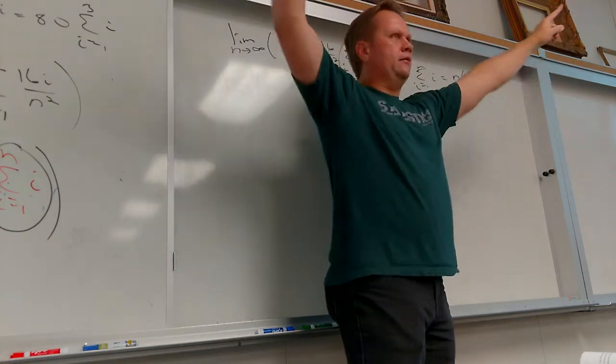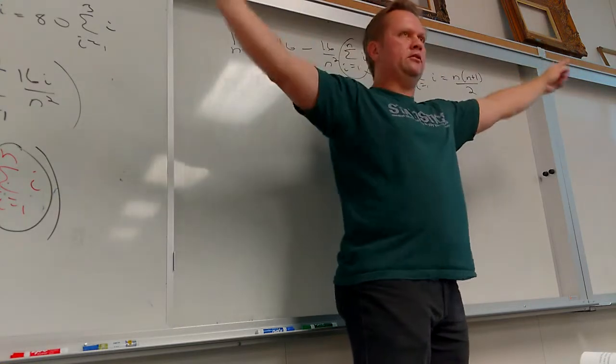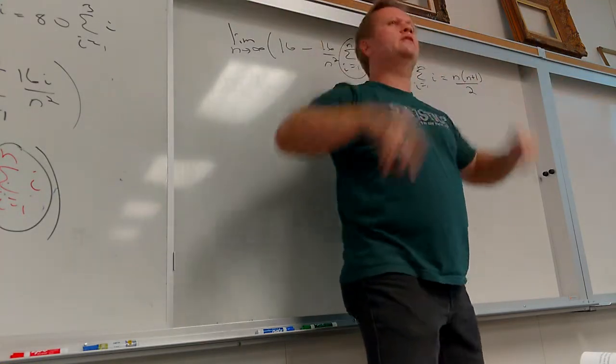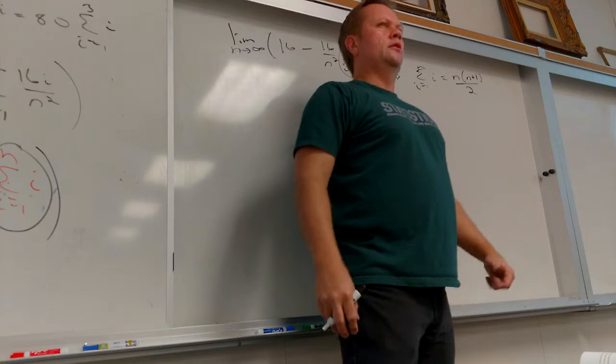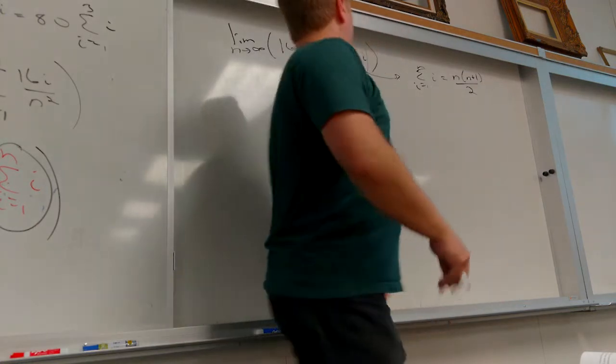So you have n over 2 pairs of 1 plus n. Remember that's what Gauss did. He kind of put the first two together on the extremes. And then he had the next two. And then he added the next two. Do you guys remember that? We did that. Okay. So right there.